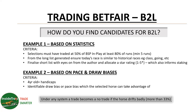So that's the first example - based on statistics, finding horses that more often than not trade at 50% of their BSP. 50% of BSP is what's called a DOB - double or bust - but what I do is something different. That's how I'm choosing candidates and getting them down to a shortlist. Example two is based on pace and draw biases.